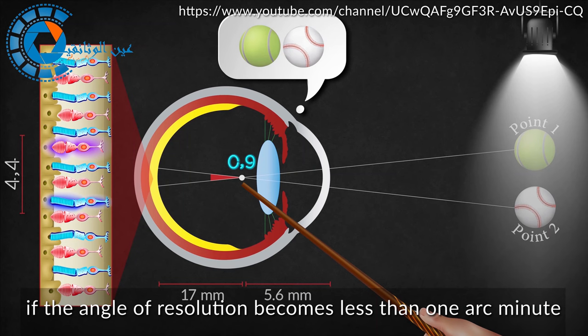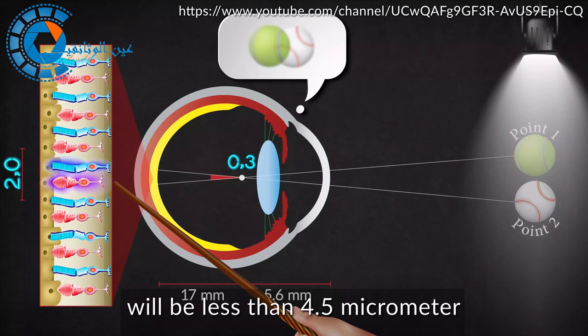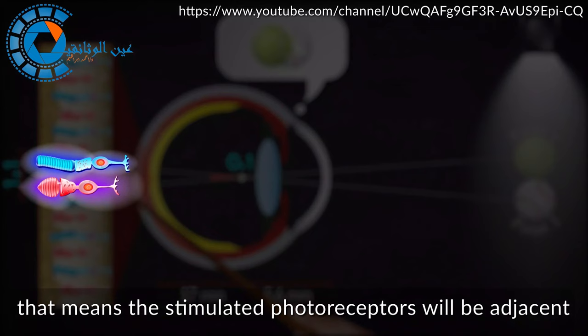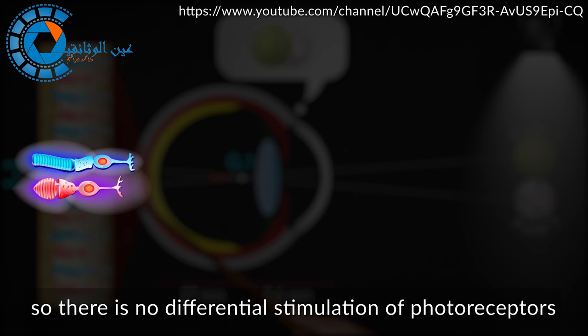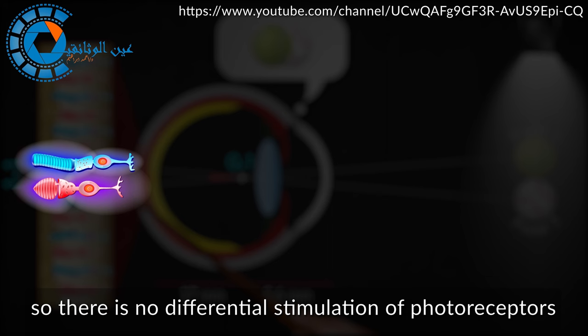If the angle of resolution becomes less than 1 arc minute, the distance between stimulated photoreceptors will be less than 4.5 micrometers. But what does that mean? That means the stimulated photoreceptors will be adjacent, with no unstimulated photoreceptors in between. So there is no differential stimulation of photoreceptors, and the vision will be blurred.